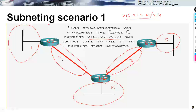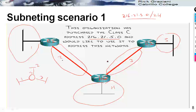Every router interface is a network. Whenever you have a LAN, then a router, then another LAN, that's two networks, because a router is always a boundary — it combines two or more networks. If you have another interface, that's three networks. In this case, counting every router interface gives us five networks.